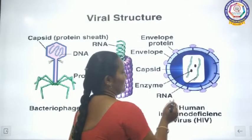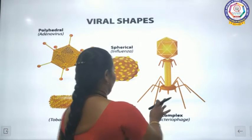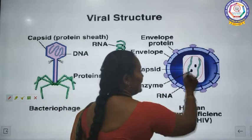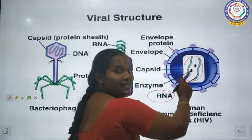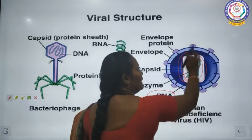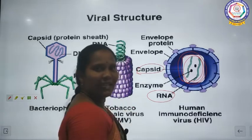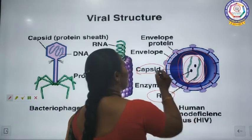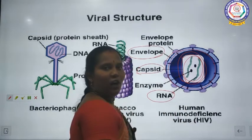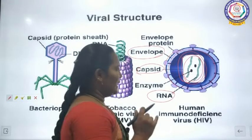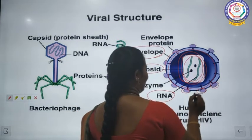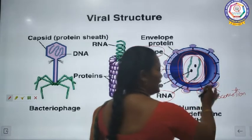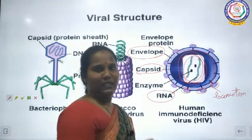Structure of virus: the virus has genetic material — DNA or RNA. This genetic material is covered with a protein coat. This protein coat is called the capsid. Some viruses are covered by an extra outer layer called the envelope. These envelopes are made up of protein, fat, and carbohydrate. These envelopes have thorn-like spikes. These spikes help the viruses to attach with the host cell.